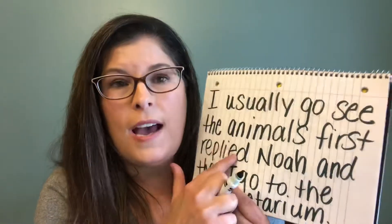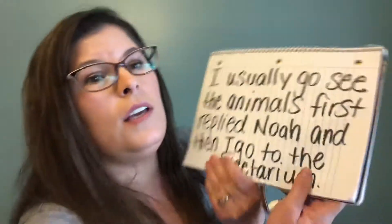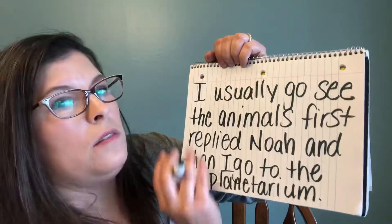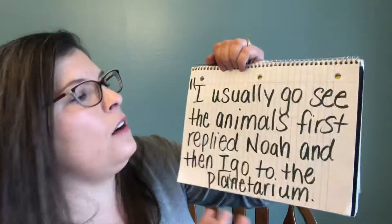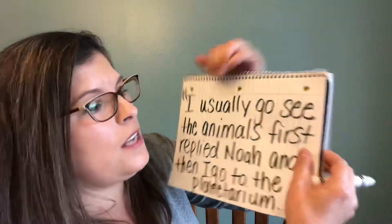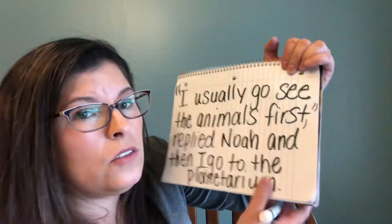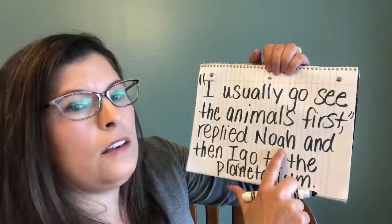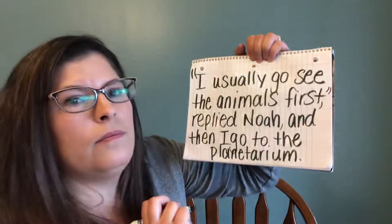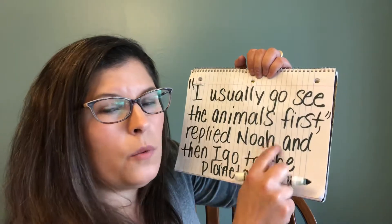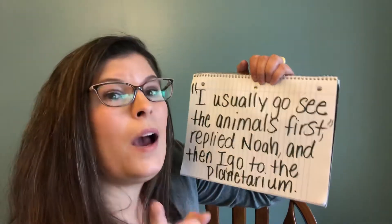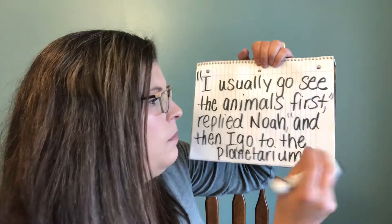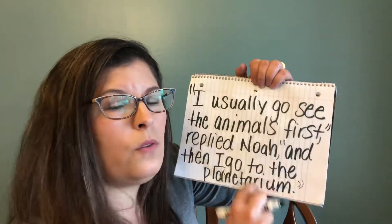We have the dialogue tag in the middle of this sentence. Noah said 'I usually go see the animals first' — so we open quotation marks there. Because there's no punctuation at the end of that part and the sentence isn't over, we put a comma before closing the quotation mark. Then 'replied Noah' is the tag, followed by a comma, and then we open new quotation marks for 'and then I go to the planetarium.' So we end up with two sets of quotation marks in one sentence.